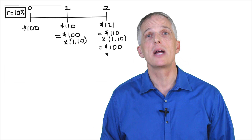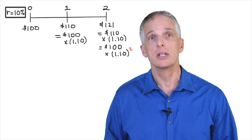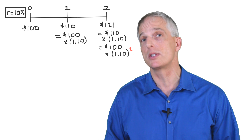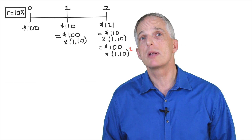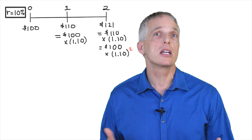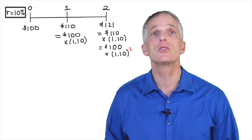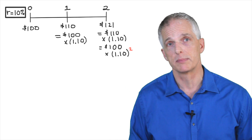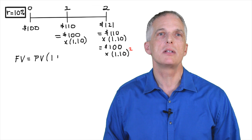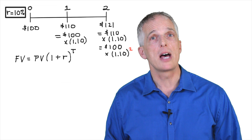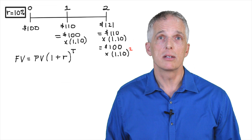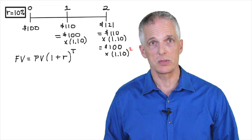Note that I can also calculate the balance at the end of two years by multiplying our original investment by one plus the interest rate raised to the power of two, or 1.10 squared. By squaring one plus the interest rate, we automatically incorporate compound interest into our calculation of the future value of $100 at the end of two years. In general, the future value of an investment, FV, is equal to its present value, PV, times one plus the interest rate R, raised to the power T, where T is the number of periods over which the interest rate is earned.